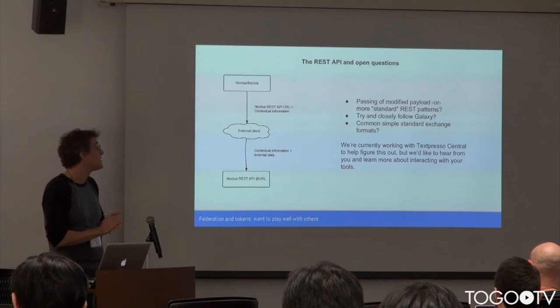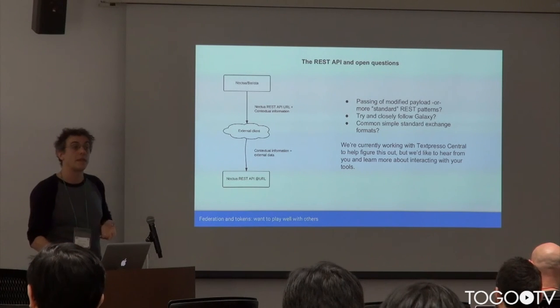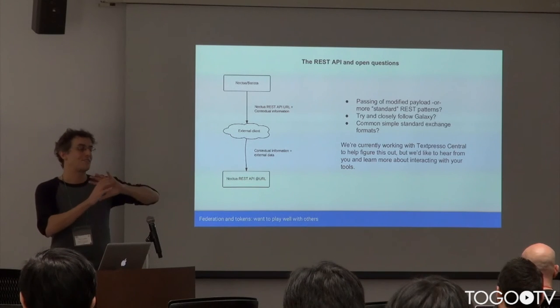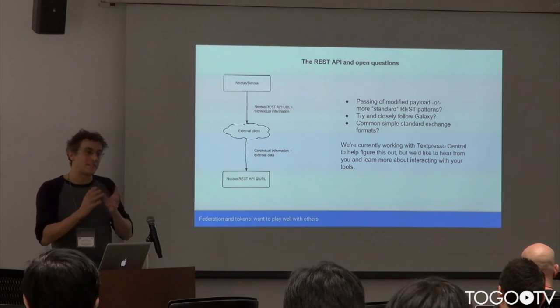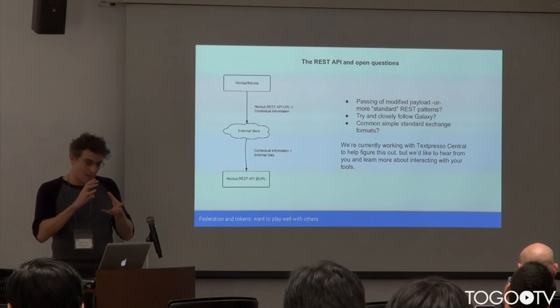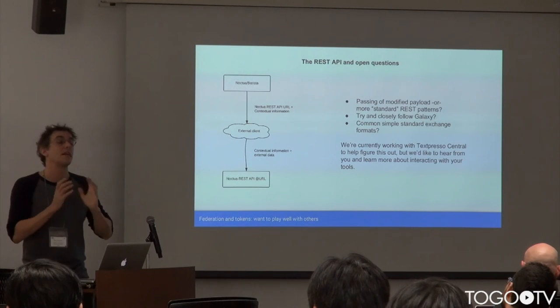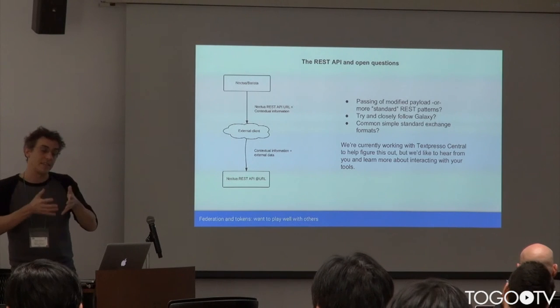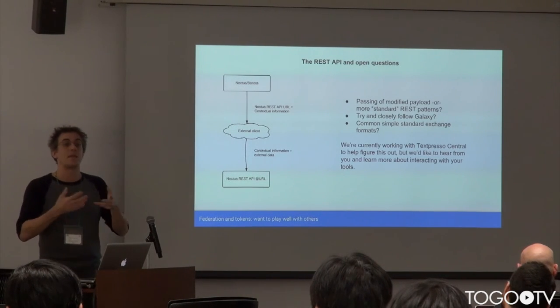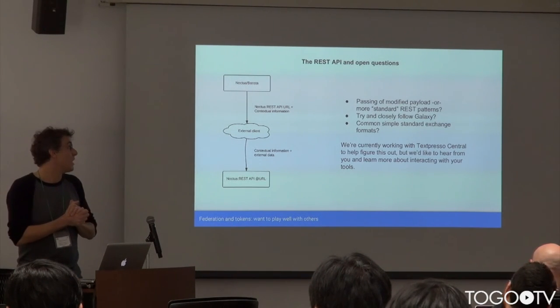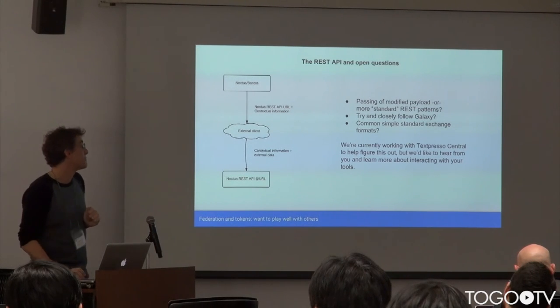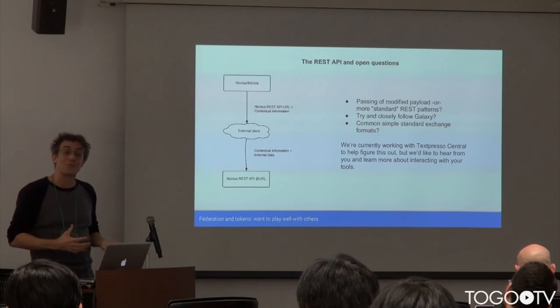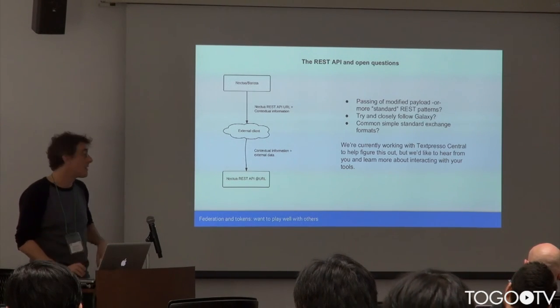And so what are the common simple exchange formats that are out there? You know, we'd like to talk about those. If there's not one, maybe we can talk about one. We're looking for something that's pretty high level. We don't necessarily want to get something too, you know, we're not trying to build an ELMO here. We're just trying to communicate enough information to be able to reconstruct a link back to an external resource, enough contextual information to be able to have links and maybe some summary information within the system. So, if you're interested in working as an external tool with the Noctua system, we'd love to hear from you.